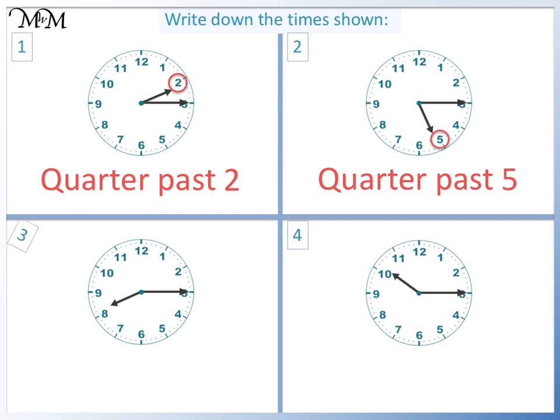Question three. The minute hand is at three. So, quarter past. The hour hand is just past eight. The time is quarter past eight.